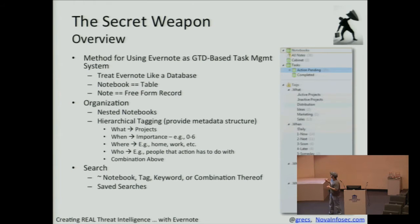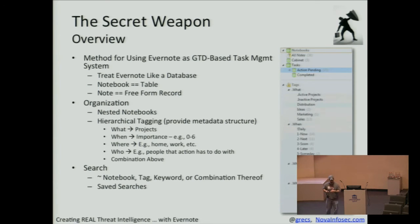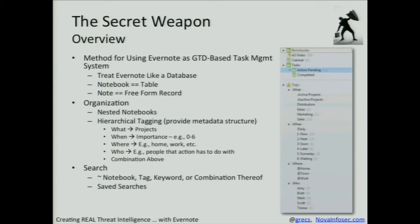The key takeaways I got from experimenting with this: if you use Evernote, you just think of it as creating notebooks and putting notes there. But if you step back, think of Evernote as a database where a notebook is a table and a note is a freeform record. Following the GTD method, they have a specific GTD notebook segmented off so you could nest notebooks so that all your GTD stuff would be in one part and not interfere with the rest.